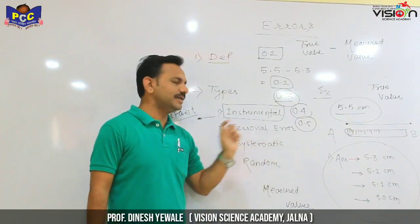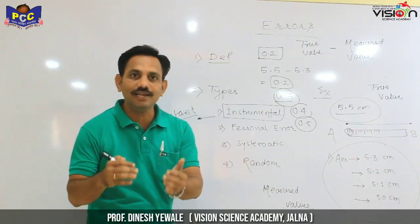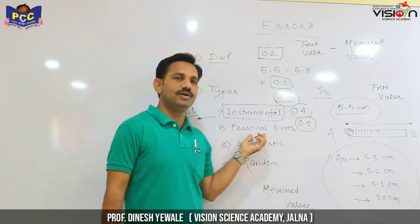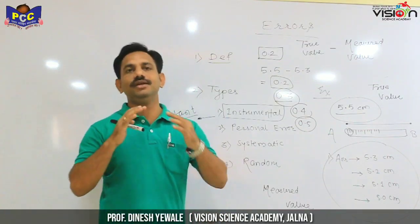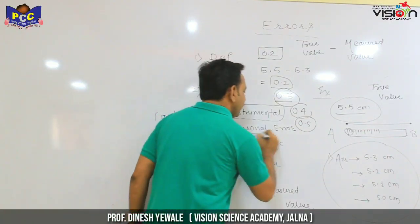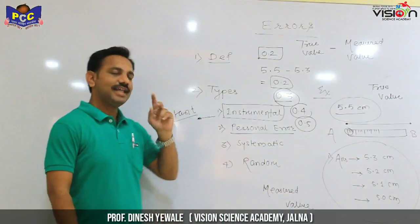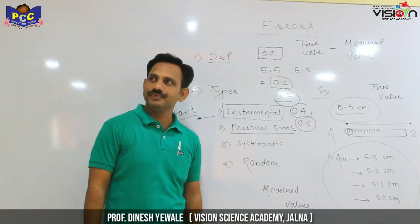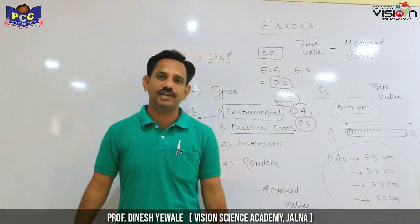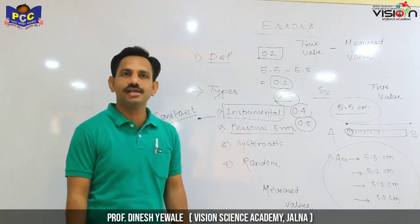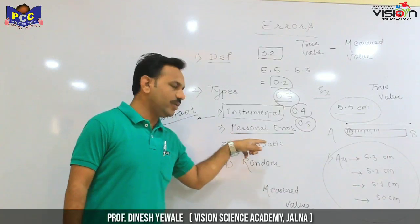The second point is the personal error. Person to person, there are limitations. We have to recognize that beyond a particular limit, differences occur from person to person. So the second type is personal error — and personal error is developed person to person. We have vision, but we may have defects.